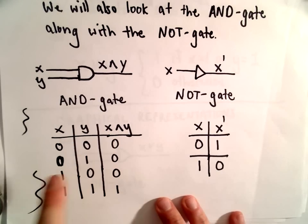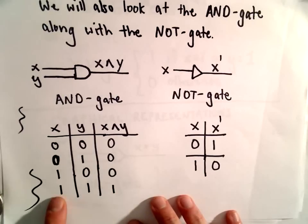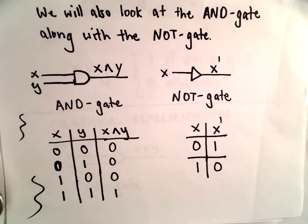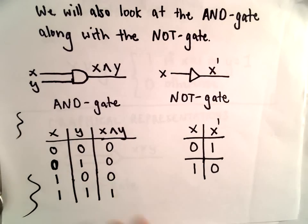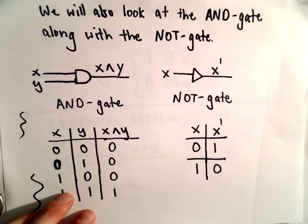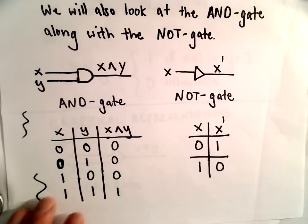Looking at the truth table for the AND gate, the only time we get an output of one is if both x and y equal one. I'm going to stop here — in the next video we'll do more examples. I'll give a scenario where an AND gate would be appropriate when designing a circuit, and we'll also look at creating diagrams, creating Boolean expressions, deciding if Boolean expressions are equivalent, and some other good stuff as well.